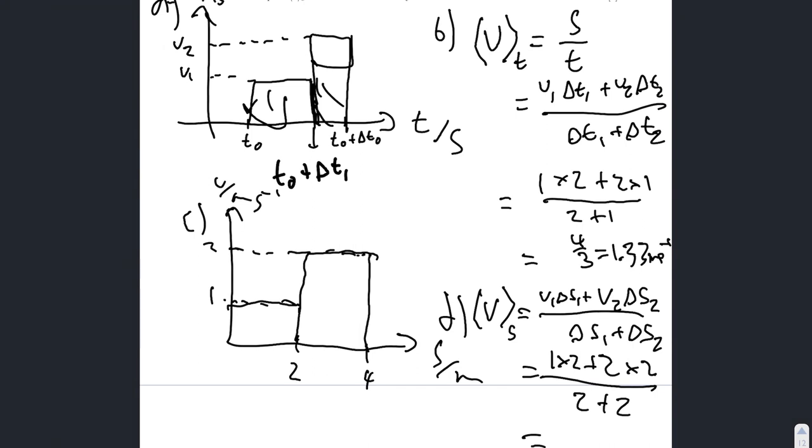So, it equals 2 plus 4, which is 6 over 4, which equals 1.5 metres per second.